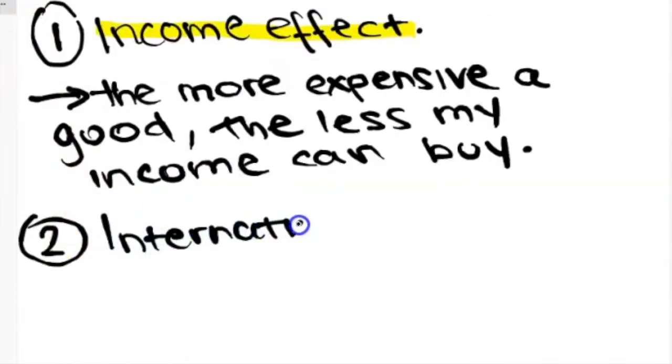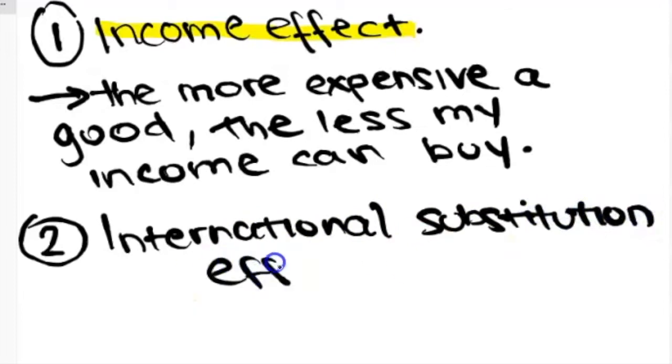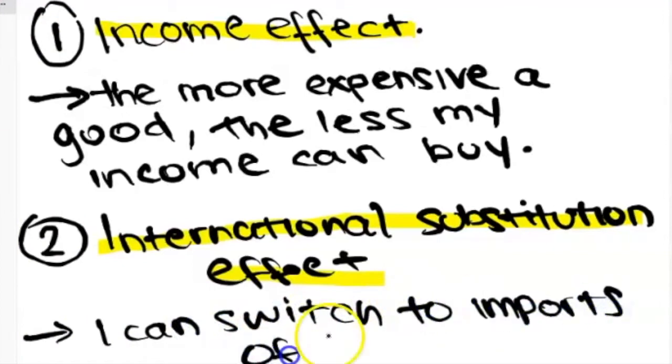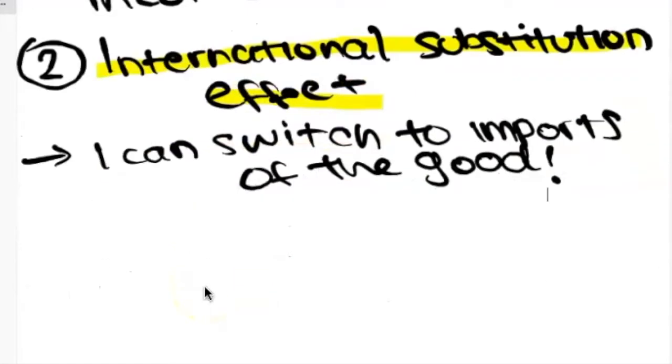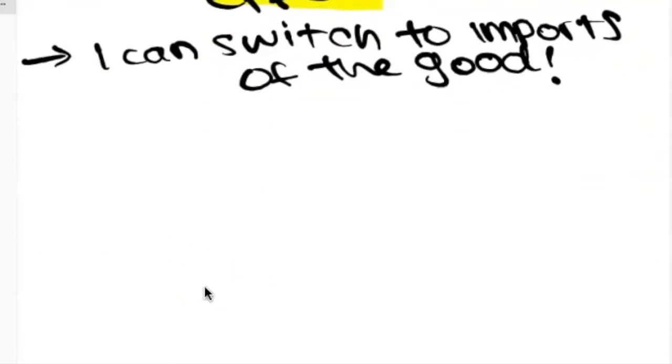Another reason is because of the international substitution effect. If the price of a good increases, then I might decide to import a good from another country. So the quantity demanded of the good whose price has gone up will not get as much quantity demanded because people will switch to other substitutes.